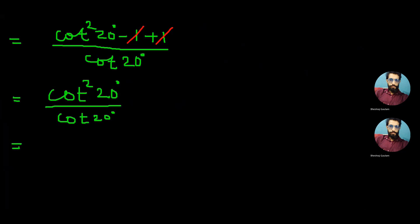As the numerator is the square of cot20°, we can cancel one cot20° from numerator and denominator. Now it remains only single cot20° which is the right side of our equation. Hence LHS and RHS are equal as required.